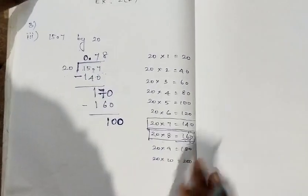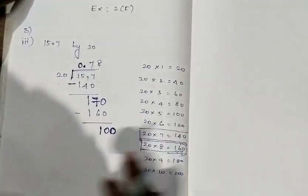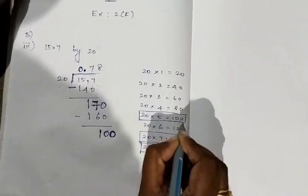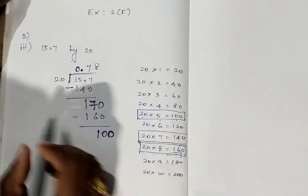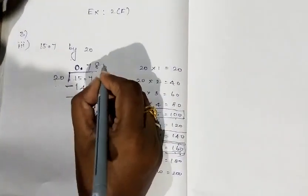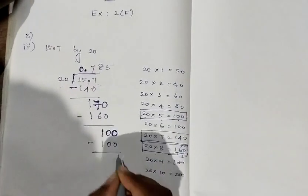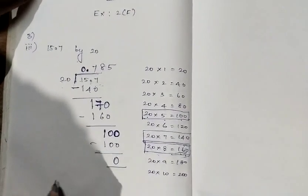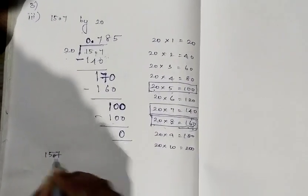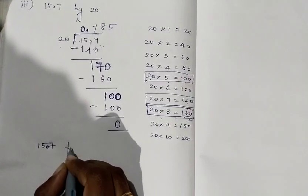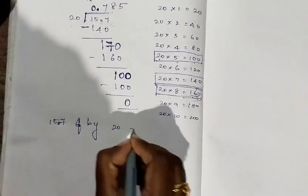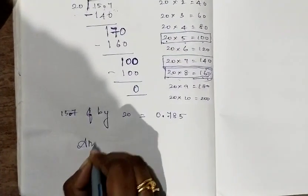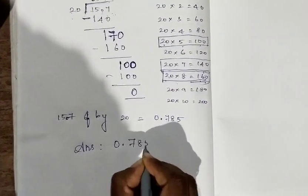Next I am going to check whether we are having 100 in the 20 times table. Yes, we are having 100 — that is, 5 × 20 = 100. So if we cancel 100 from 100 we will be getting 0. So the answer is: if we divide 15.7 by 20, we will be getting 0.785. The answer is 0.785.